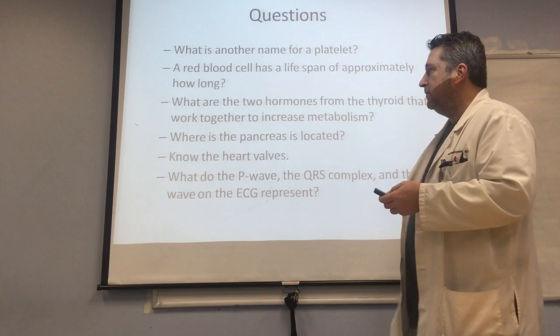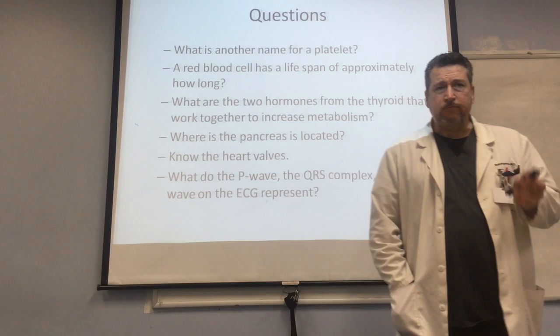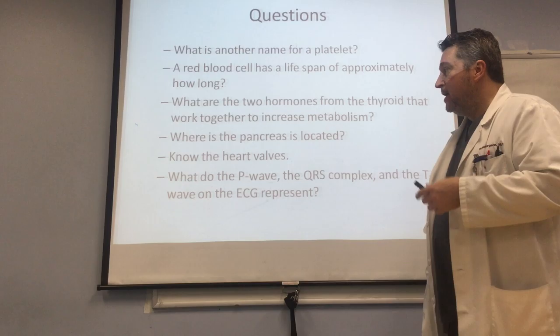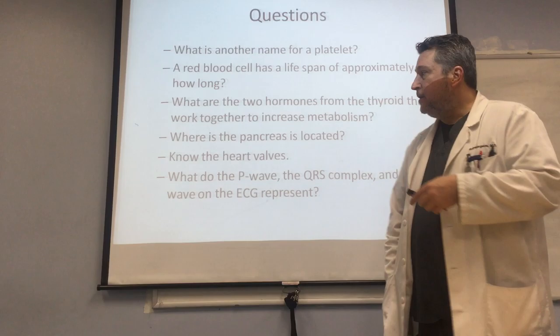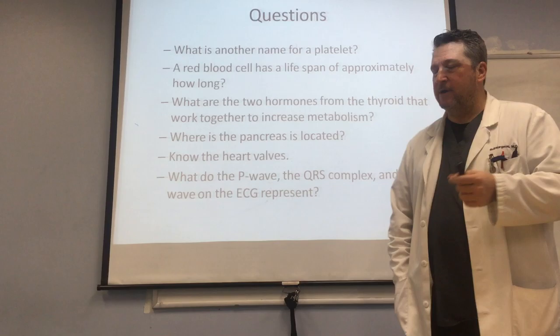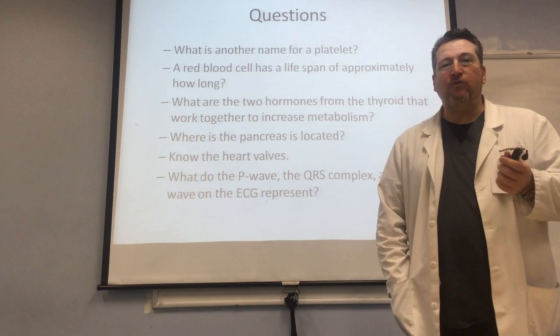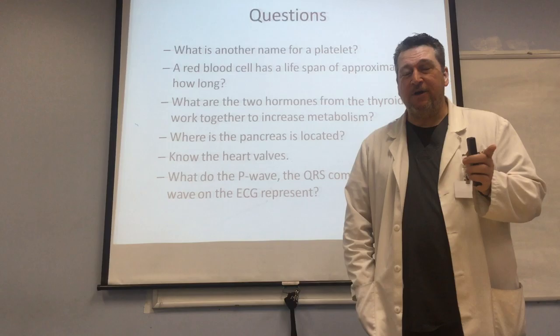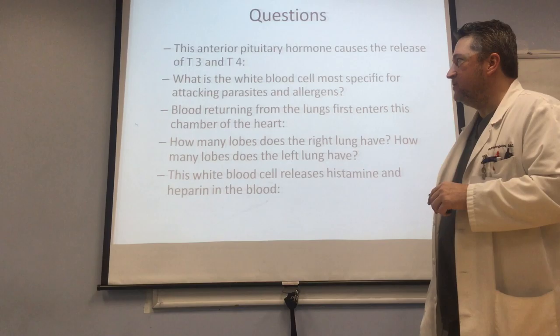What do the P-wave, QRS complex, and T-wave on the ECG represent? The T-wave represents the repolarization of the ventricles. Both the P-wave and QRS complex have to do with depolarization. The P-wave represents depolarization of the SA node — the sinoatrial node, or pacemaker of the heart — as well as right and left atrial depolarization. The QRS complex represents depolarization of the ventricles, and the T-wave is the only one that represents repolarization.